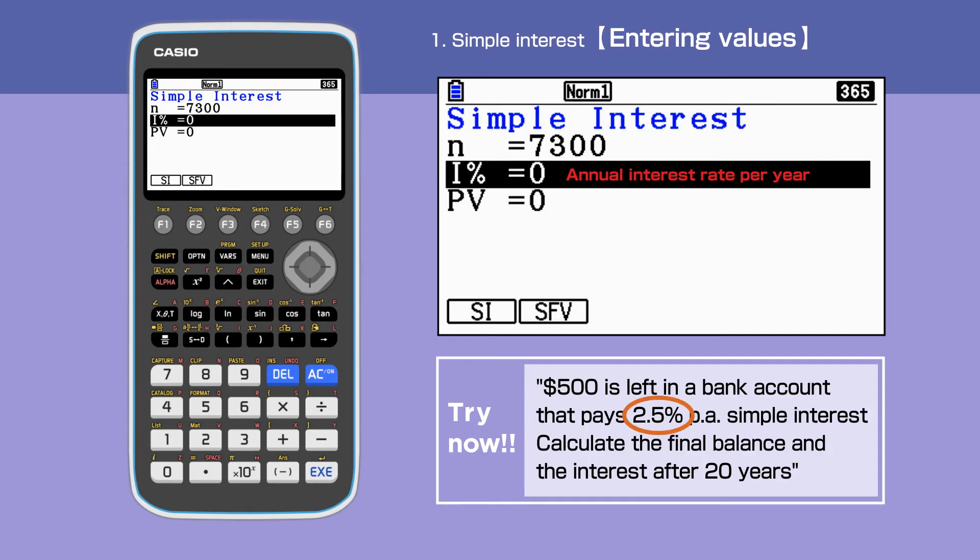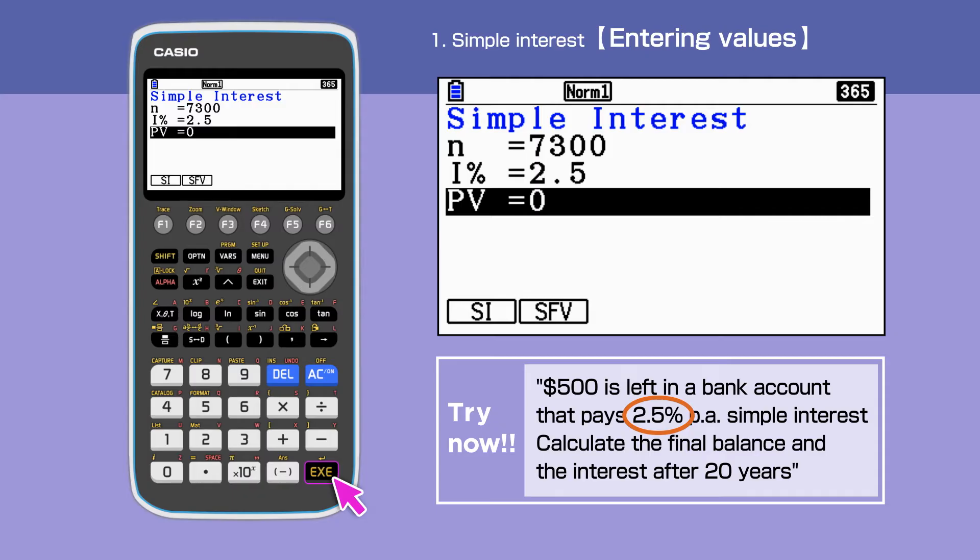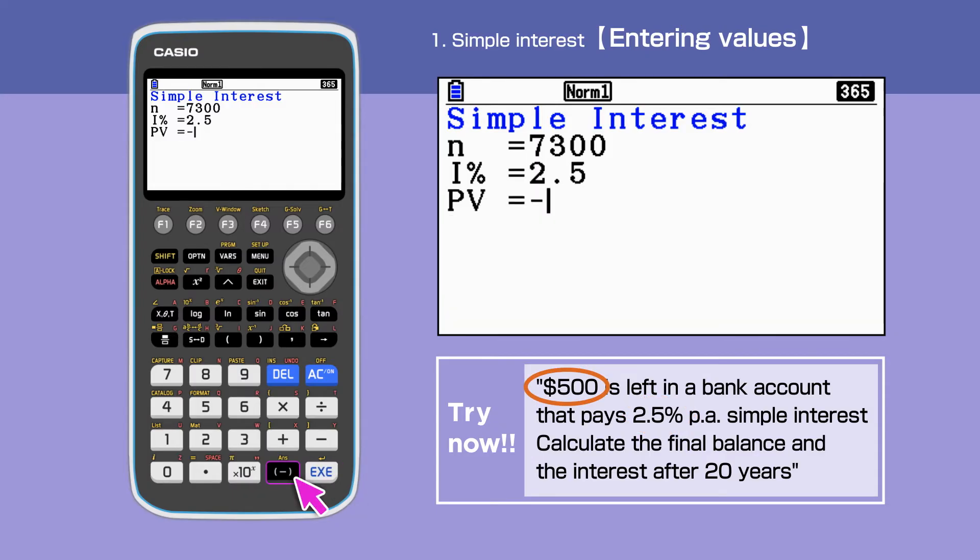For I% we enter 2.5. And for PV, present value, enter minus 500.